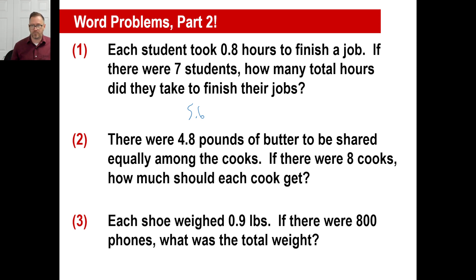There were 4.8 pounds of butter to be shared equally among the cooks. There were eight cooks. How much did each cook get? In other words, this is 4.8 divided by eight. Now five divided by eight is like half, maybe somewhere around there. So that's our estimate. Now we ignore this and go 48 divided by eight is six. But that's not half. What's half? Close to half? 0.6. There we go.